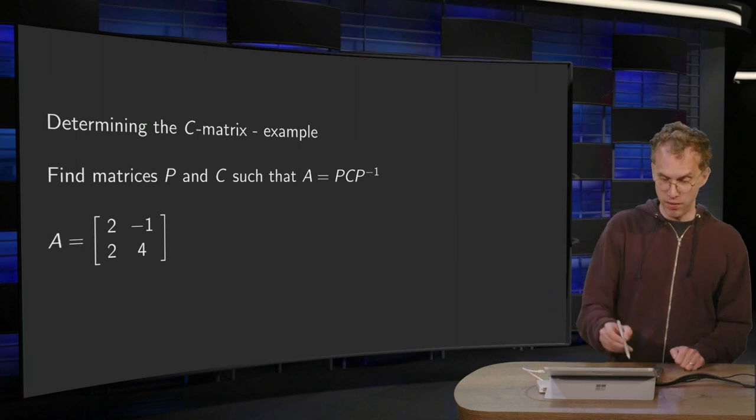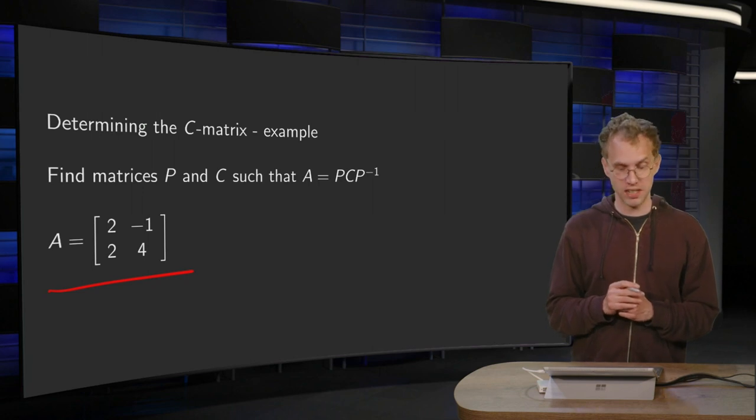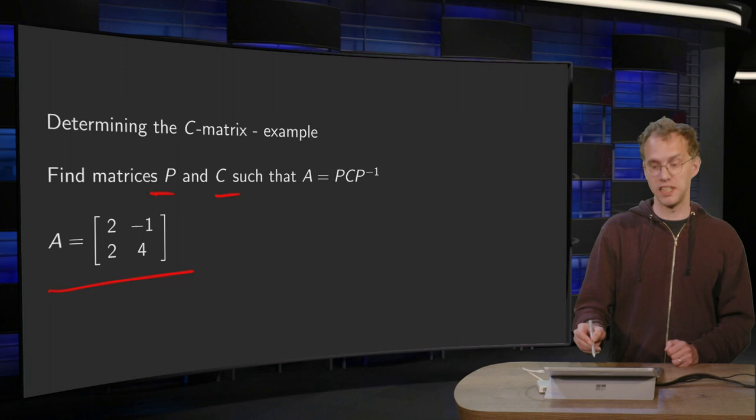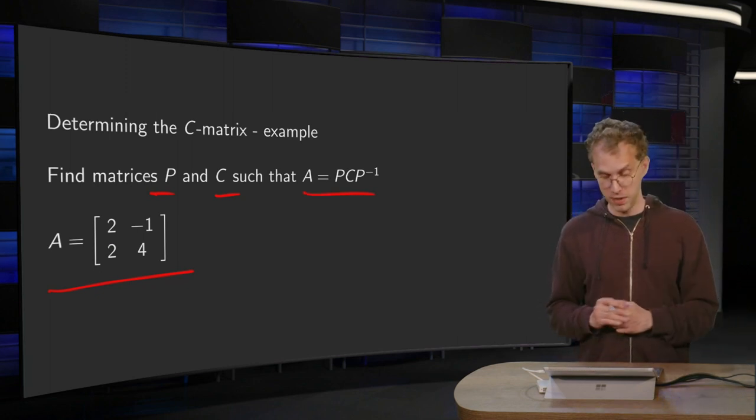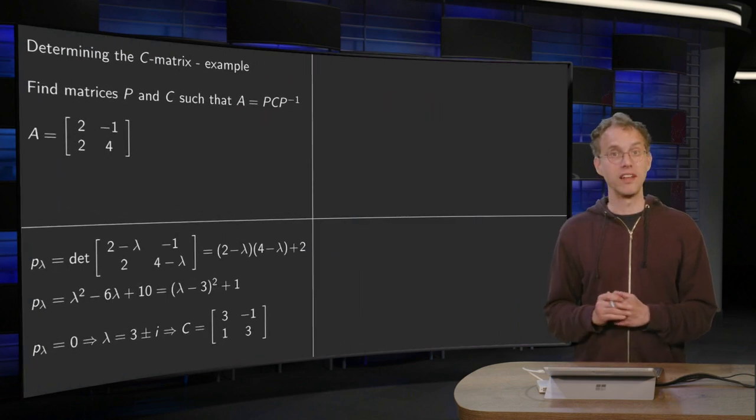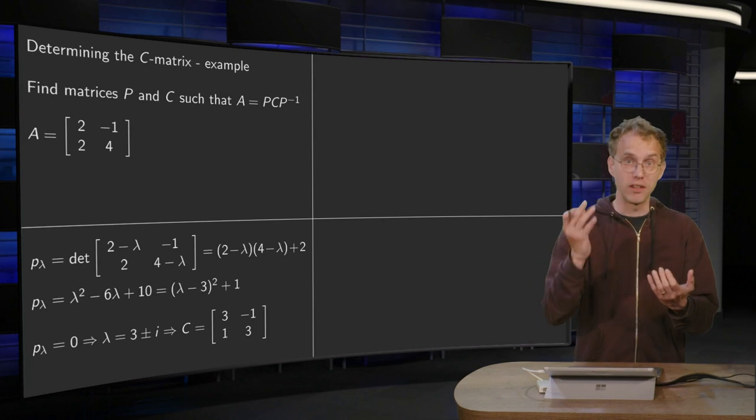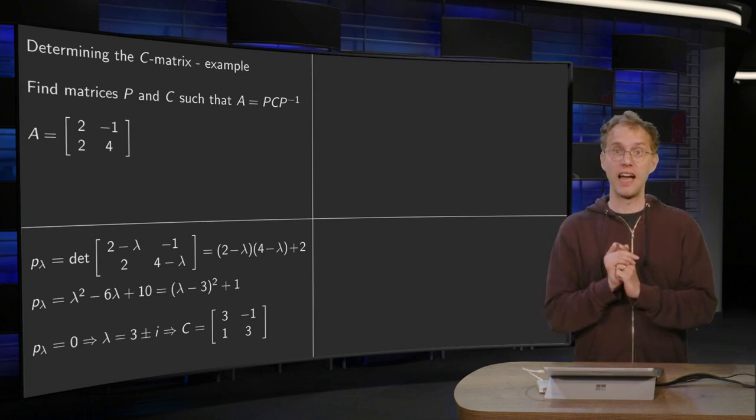So here we have our matrix A, not a scaling rotation matrix yet, and the question is, find matrices P and C such that A is similar to C. So A equals PCP inverse. Now we have a theorem that taught us what to do. We had to find an eigenvalue and a corresponding eigenvector. So let us start with the eigenvalue.